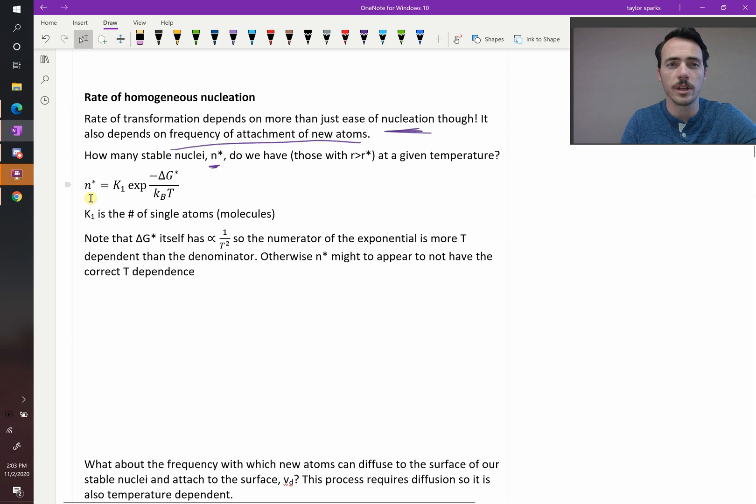N-star, the number of critical nuclei, is equal to K1, some constant, multiplied by the exponential of negative delta G-star, our activation energy for nucleation, divided by thermal energy, KBT. Now, normally when we see something like this, this looks like a typical Arrhenius equation. And so you'd expect that at higher temperatures, you have more of them.